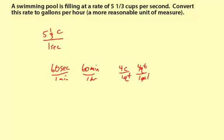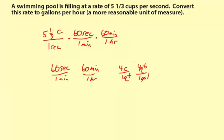We're going to do the time conversion first. I notice that one second is in the denominator, so in order to cancel it out, I'll need seconds in the numerator for the next conversion. So I'm going to put 60 seconds per one minute. Now minutes are in the denominator there, so I want minutes in the numerator for the next conversion — 60 minutes per one hour. If you wanted to break it up, this would be a good stopping point: you'd end up with cups per hour, and then convert from cups to gallons.